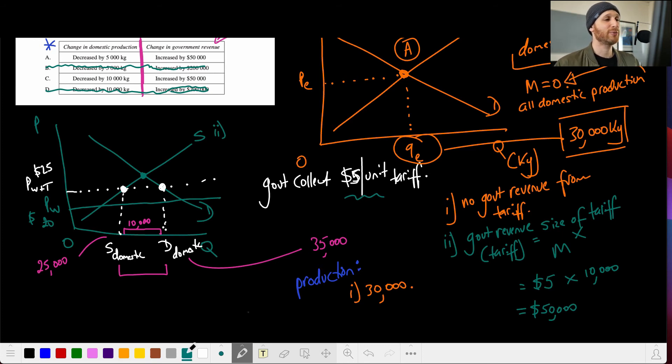Then if I go to situation two here, what is domestic production? So domestic production would be supply domestic, how much domestic producers make. So I'm looking here. So what is supply domestic? And that what we know is that if the total amount is 35,000 and imports are 10,000, then that would be 25,000.